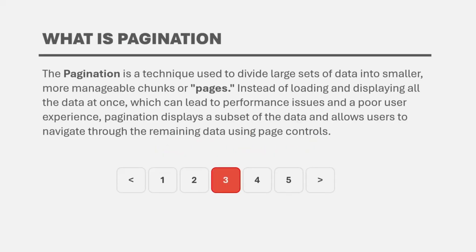Pagination is a technique used to divide a large set of data into smaller, more manageable chunks or pages. Instead of loading and displaying all the data at once, which can lead to performance issues and a poor user experience, pagination displays a subset of the data and allows users to navigate through the remaining data using page controls.